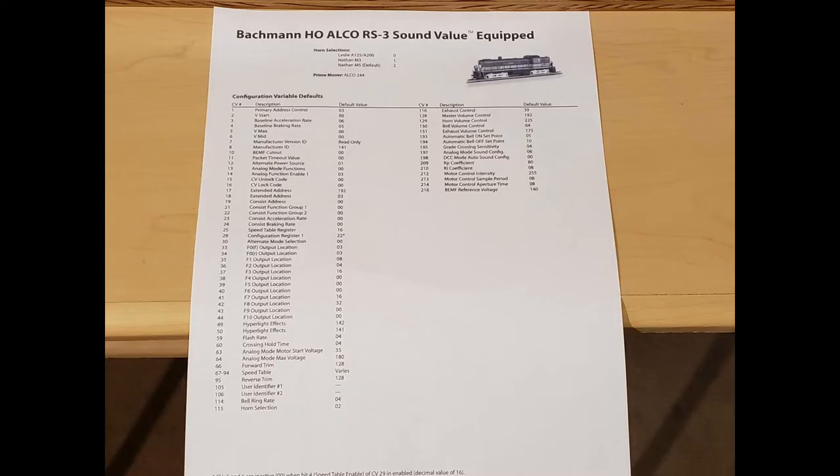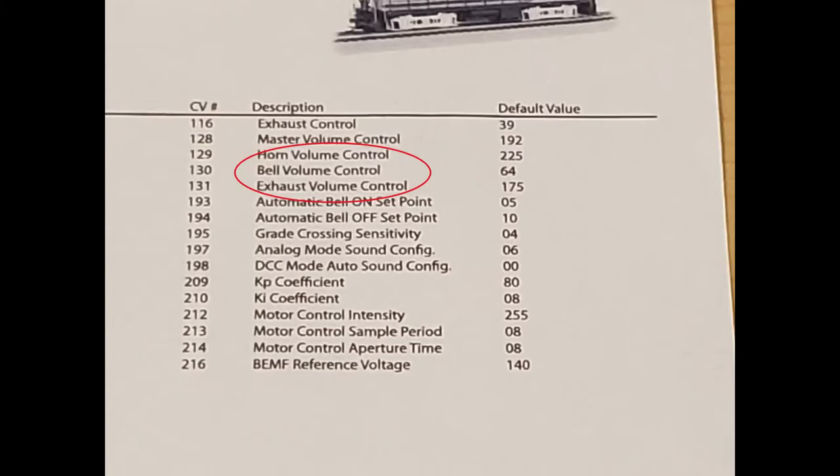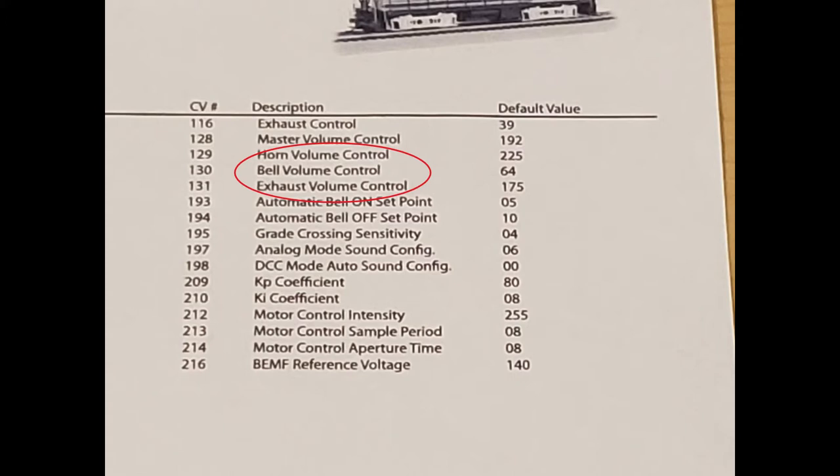My Bachman RS3 is quite easy to program. The engine did not come with an instruction manual showing the DCC settings, but I managed to find one on the internet, which can be seen in this photo. Now in the next zoom-up shot, you can see that I have circled the ones that we will be focusing on. These sounds will be the horn, bell, and exhaust control.